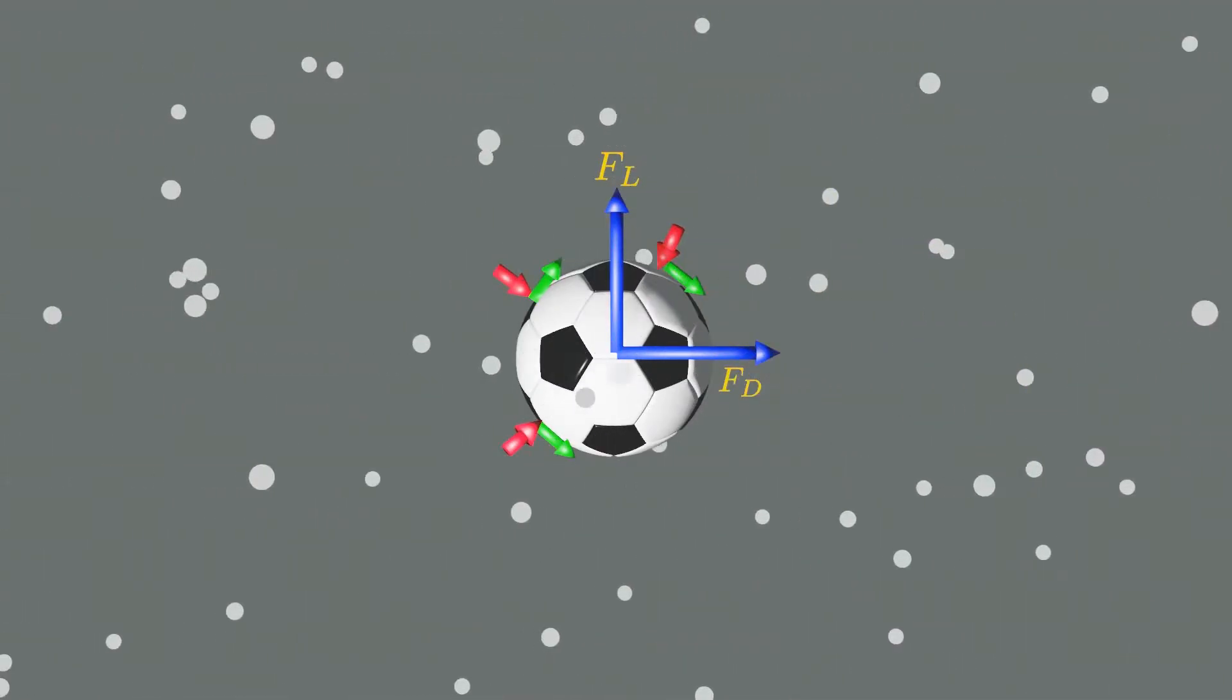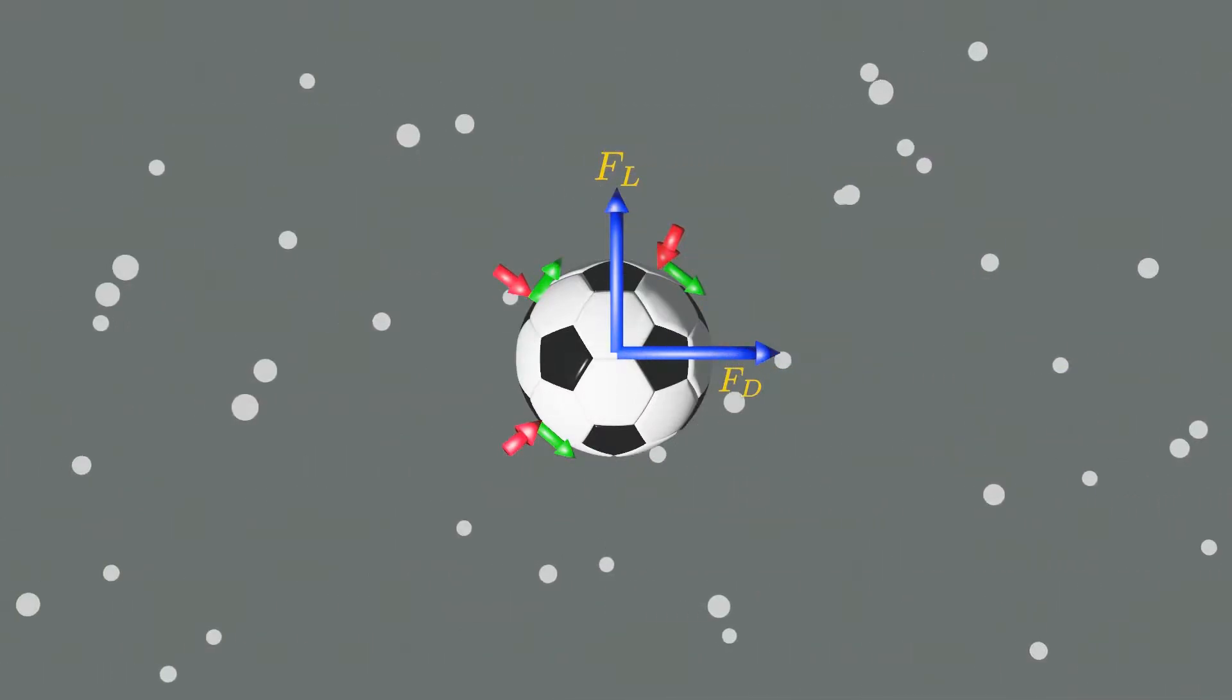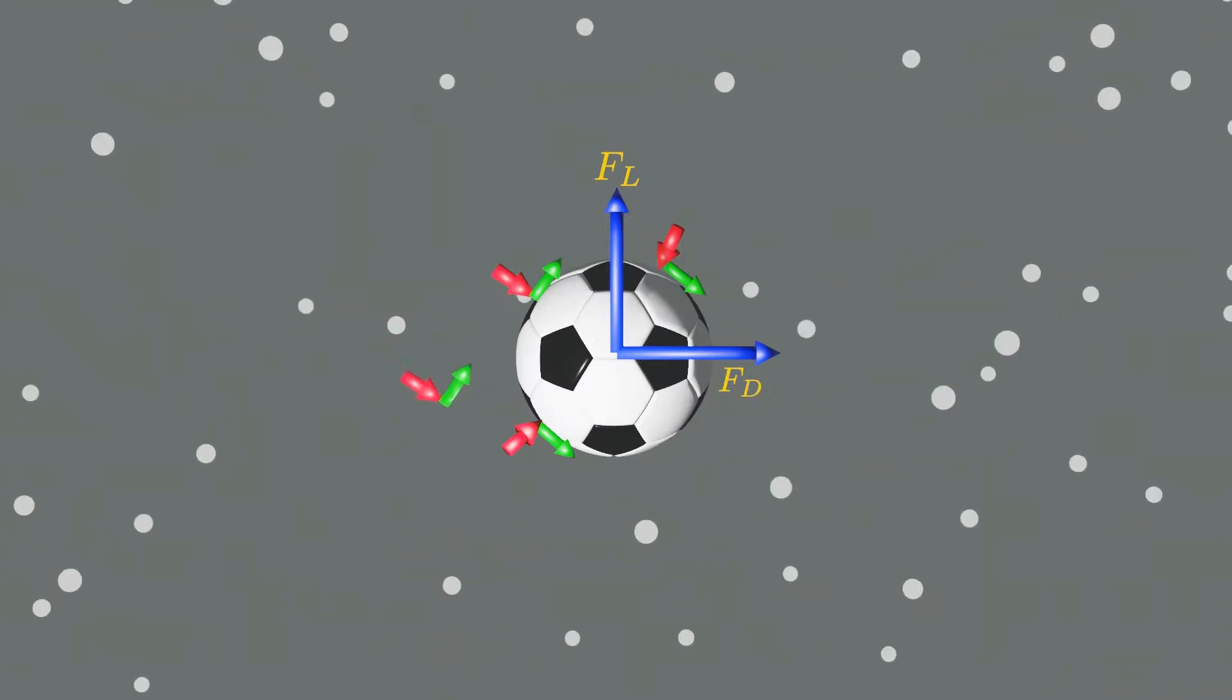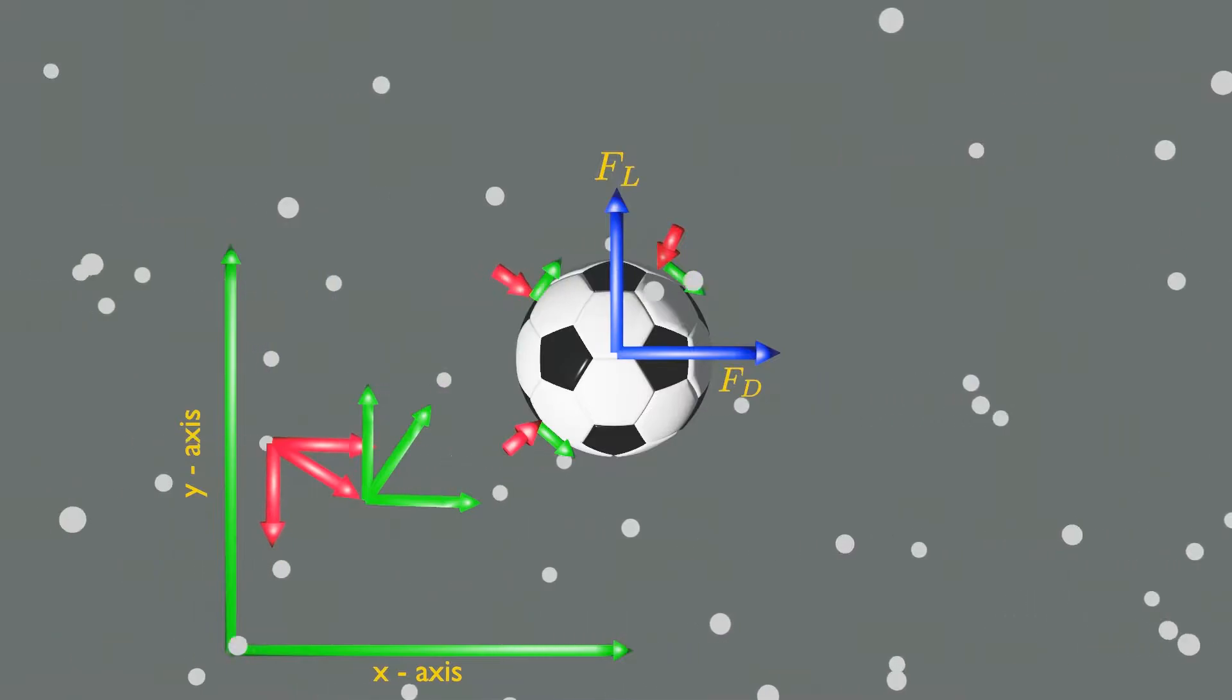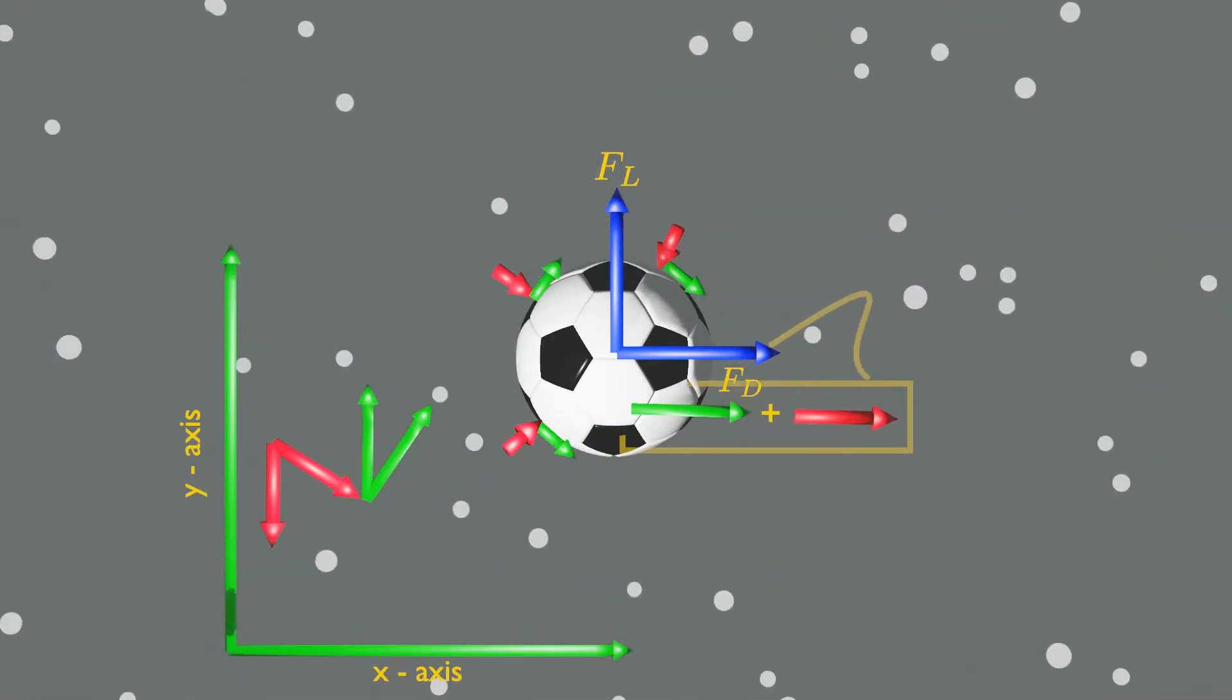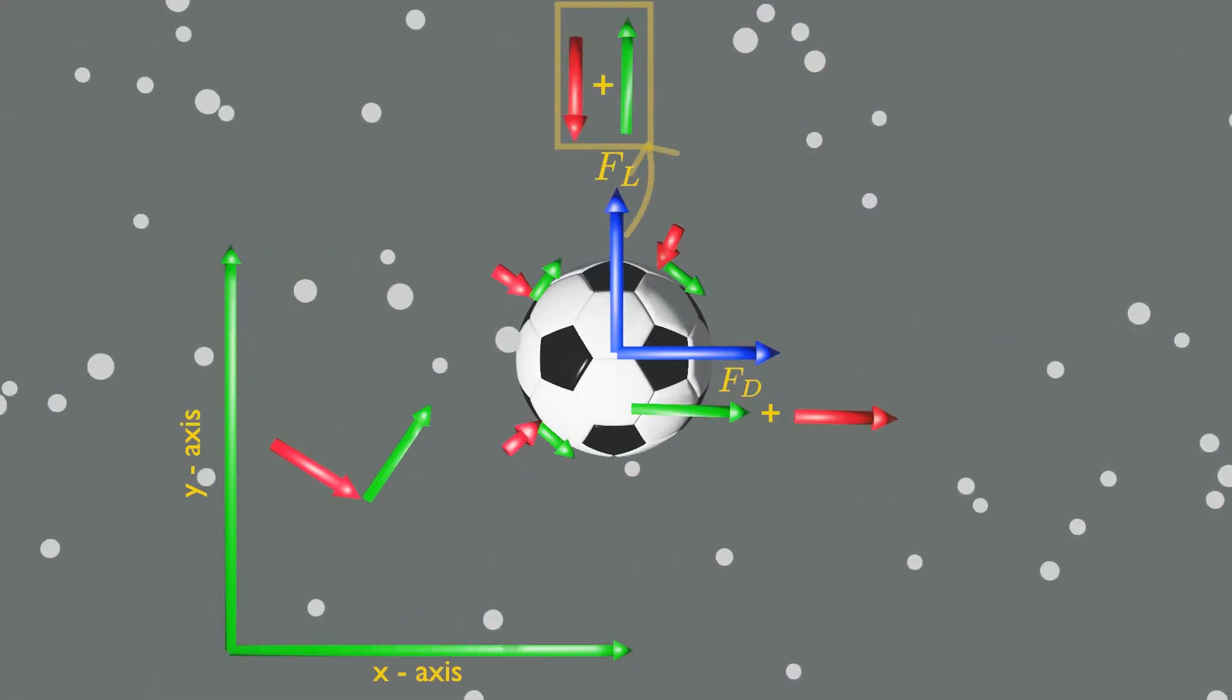So drag and lift are just the components of pressure and shear forces. In more precise way, if you create the Cartesian coordinate system, the total component of forces in x direction is called drag. Whereas the component of forces in y direction is called lift.